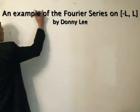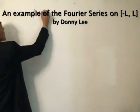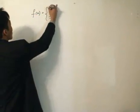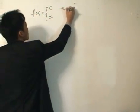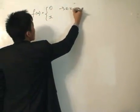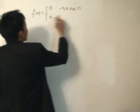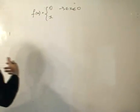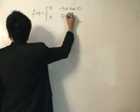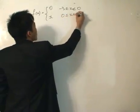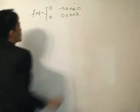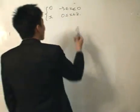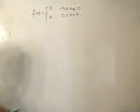The function f(x) is defined as: f(x) = 0 from -3 to 0, and f(x) = x from 0 to 3. So the function is defined from -3 to 3 — no longer pi is in play.